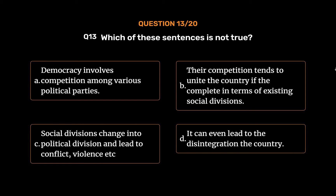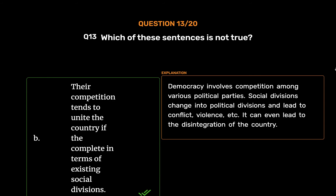The correct answer is Option B: Their competition tends to unite the country if they compete in terms of existing social divisions. Democracy involves competition among various political parties. Social divisions can change into political divisions and lead to conflict, violence, and even the disintegration of the country.